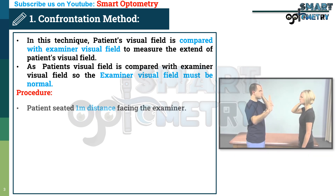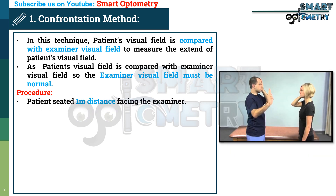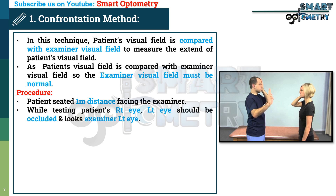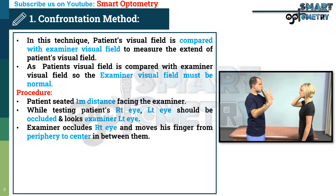Procedure: The patient is seated one meter distance facing the examiner. While testing the patient's right eye, the left eye should be occluded and the patient looks at the examiner's left eye. The examiner occludes their right eye and moves a finger from the periphery to the center in between them.